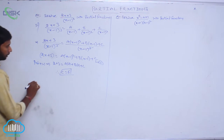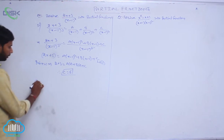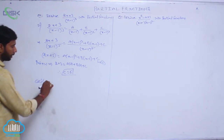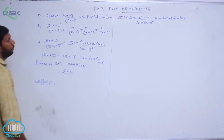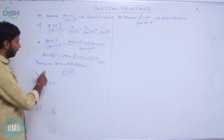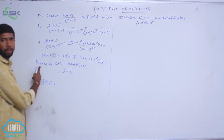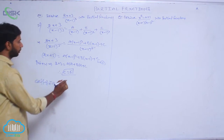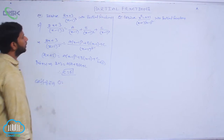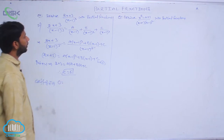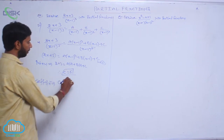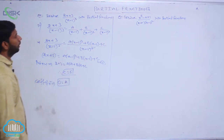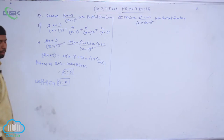Now compare coefficients of x² on both sides. On the left side there is no x² term, so the coefficient is 0. On the right side, the coefficient of x² is A. Therefore, A = 0.